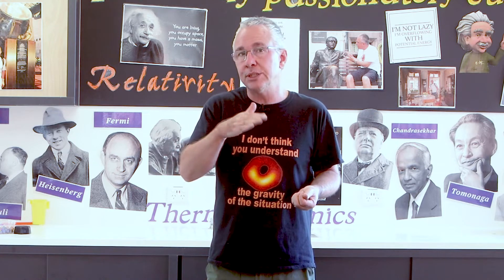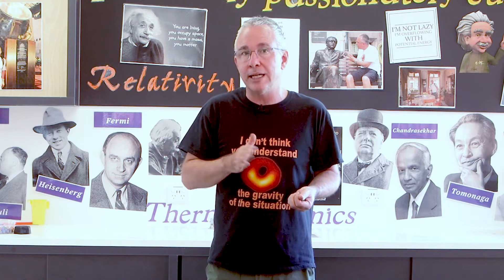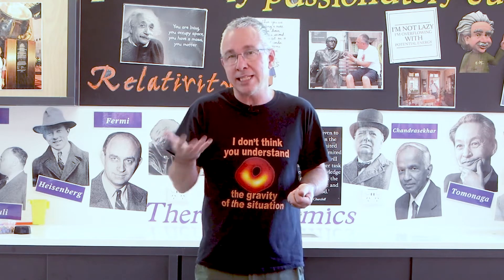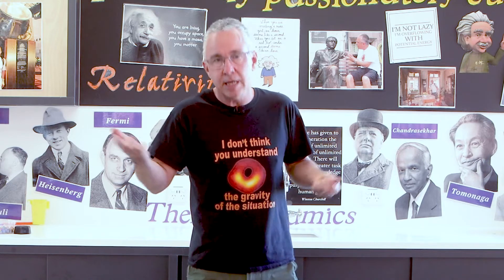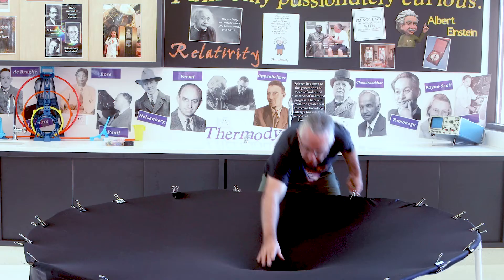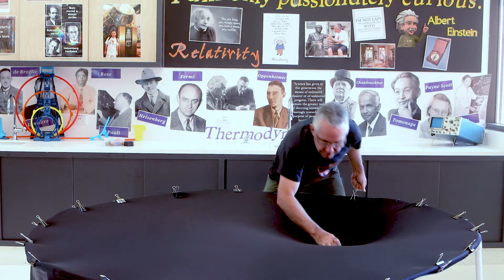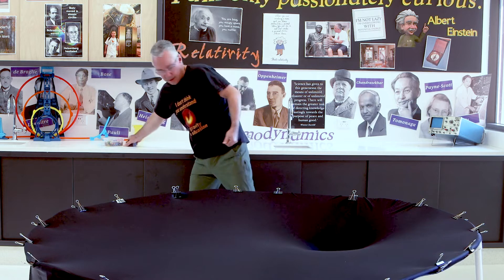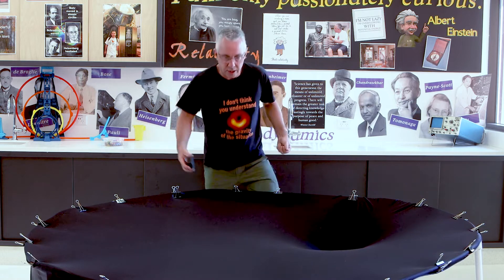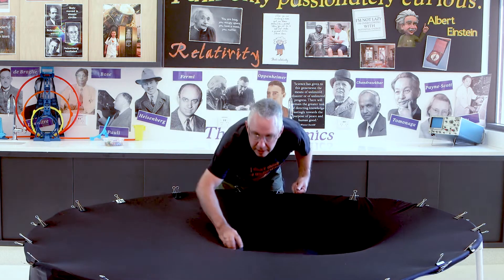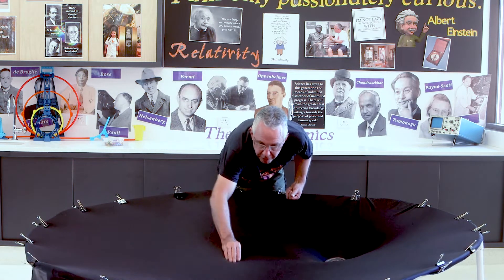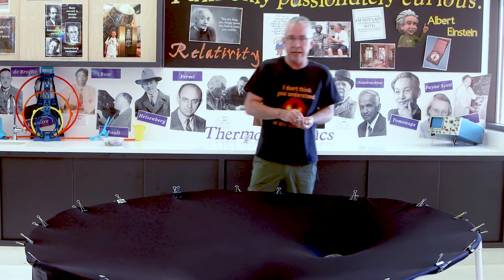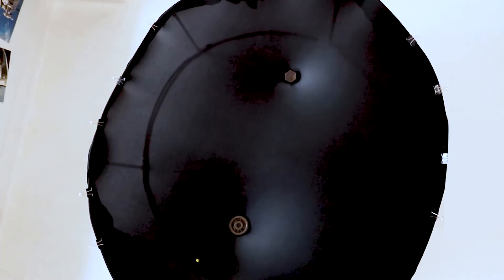I can also demonstrate how distorting space-time with two masses can cause an object to orbit in a figure-eight pattern. It takes a little practice, but I'm going to move this mass a bit closer over here and put that mass a little bit further over there, and let's see if we can get a figure-eight going around.